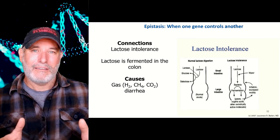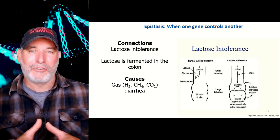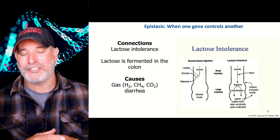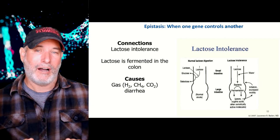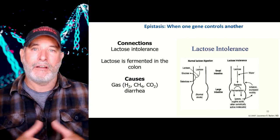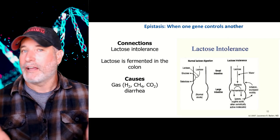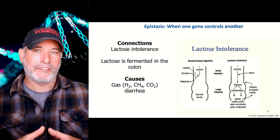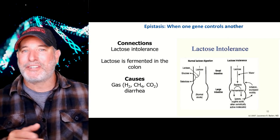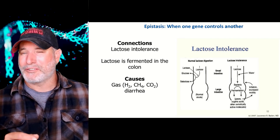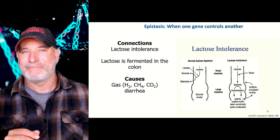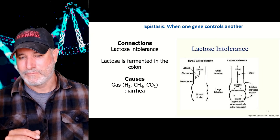I hope you enjoyed this overview of epistasis — how one gene controls another gene. It's quite common in humans. Another good example of epistasis is eye color. Stay tuned because the next episode we're going to talk about epigenetics.